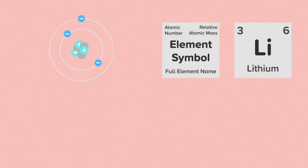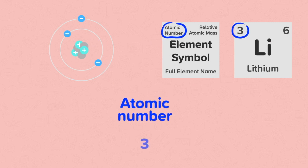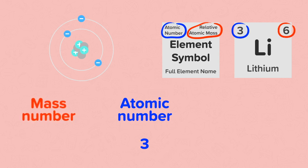This is an atom of lithium. The atomic number is the number of protons in the nucleus of one atom of that element. Lithium has three protons. The mass number is the total number of protons and neutrons in the nucleus of one atom of that element.